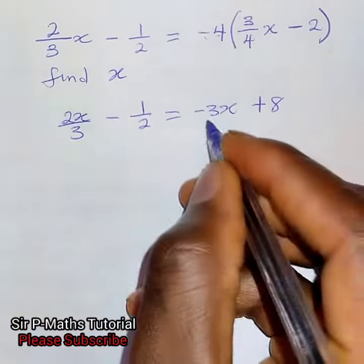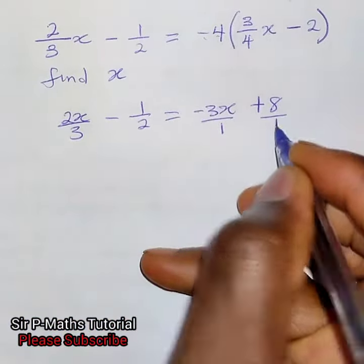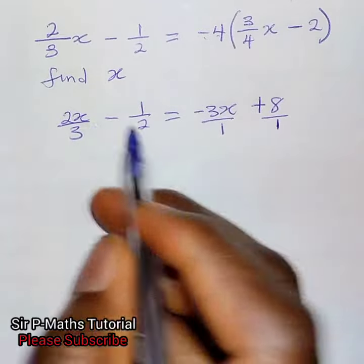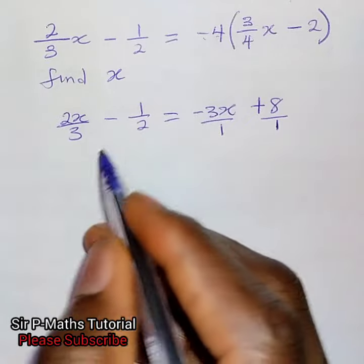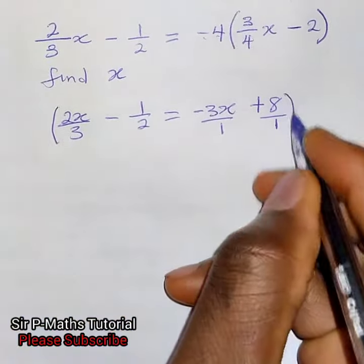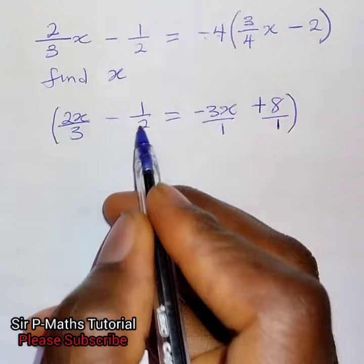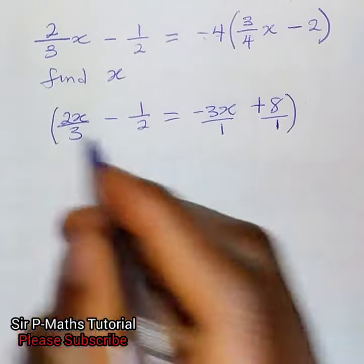Anytime you have algebraic fraction, use the LCM of the denominators and multiply the numerators or divide by the denominators so that we eliminate the fractions. So the LCM of these two guys is 6. Put it outside.